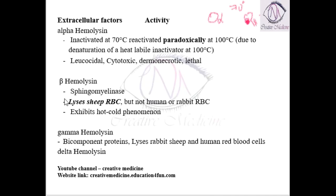The second is beta hemolysin. Beta hemolysin is a staphylococcal sphingomyelinase. It is made up of sphingomyelinase and will actually lyse sheep RBCs — not human RBCs, not rabbit RBCs. It will only break down sheep RBCs, and this beta hemolysin is responsible for the hot-cold phenomenon.